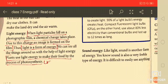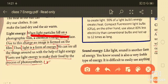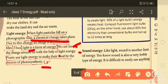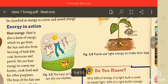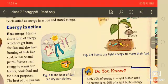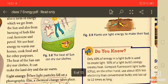And here the light energy, you will find it with the light particles when it forms on the photographic film, a chemical change takes place there. And due to this change, an image is formed on the film and the light is a form of energy. We can see all the things around us with the help of light energy and plants also use the light energy for their photosynthesis process that is shown here in this given figure.